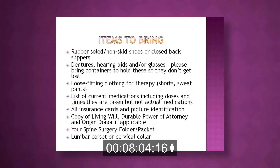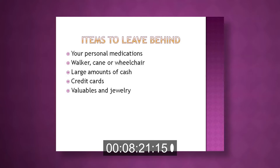You will also be given a spine surgery folder and packet — bring that with you when you come. Bring any braces or cervical collars you have; most surgeons don't use them, but we can evaluate them. Items to leave behind: leave your personal medications unless specifically asked to bring them, and you don't need canes or wheelchairs here. If you have your own walker, you may want to bring it, as it is sometimes needed with back surgery. Leave cash, credit cards, valuables, and jewelry at home.